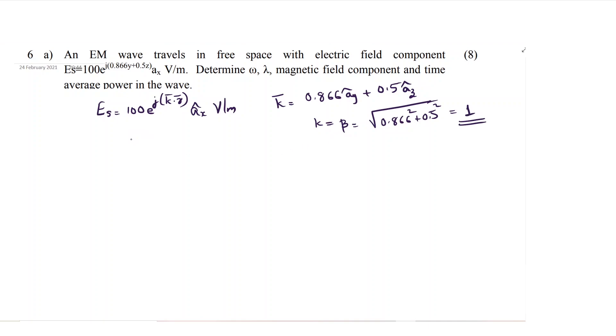Then how to calculate omega? You have the equation beta is equal to omega by velocity. To get omega, it is beta into v. It is a free space, so v will be equal to velocity in free space that is 3 into 10 raised to 8.